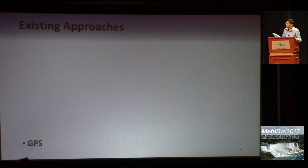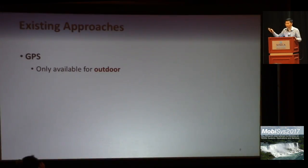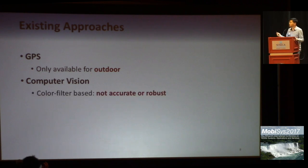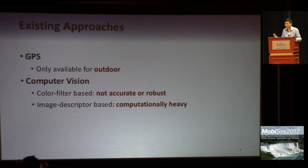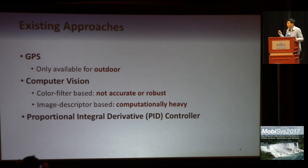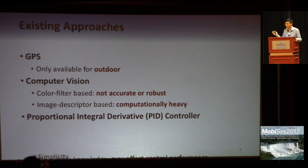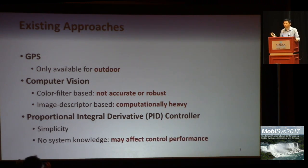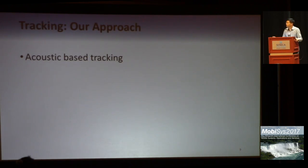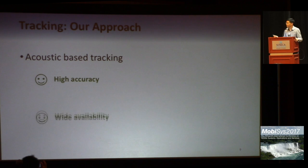For tracking, commercial drones with follow-me function rely on GPS signals, but that is only available outdoors. When GPS is not available, computer vision is commonly used to track targets. However, some simple algorithms such as color filtering are not accurate or robust, and some statistical algorithms based on image features are computationally heavy for mobile implementation. For control, several control algorithms are developed to control the flight of the drone. Among them, PID controller is most commonly used because of its simplicity and no requirement on system knowledge. But the lack of system knowledge is not free — it may affect the convergence rate and stability of the controller. In our application, we use acoustic signals for tracking because of its high accuracy, wide availability, and low processing cost.